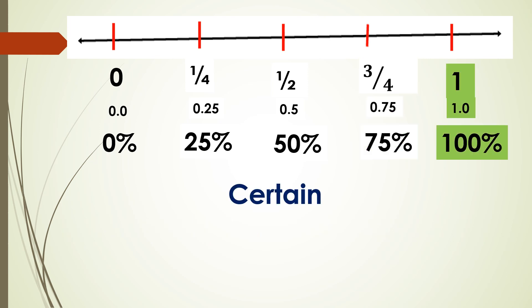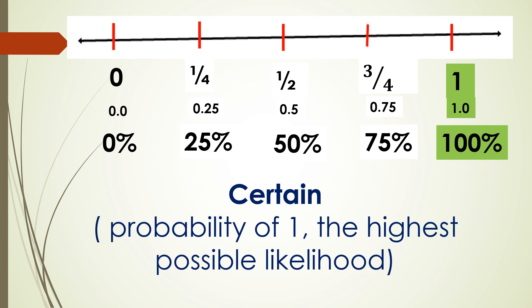Finally, we have the term certain. This is the probability of 1, or the highest possible likelihood. In here, the event is 100% sure to happen.